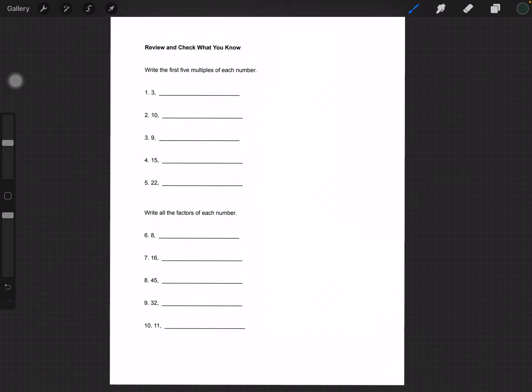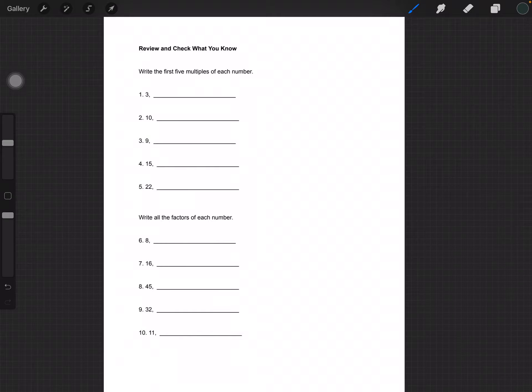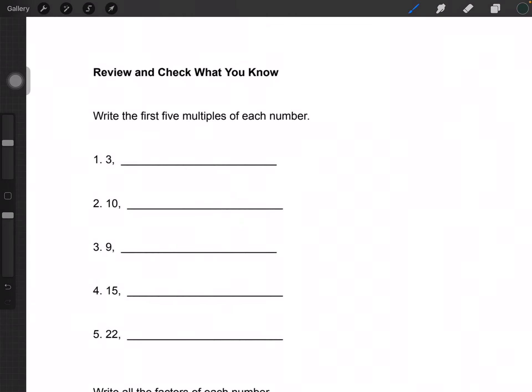The second page is asking us to write the first 5 multiples of each number. The first multiple of 3 we know is 3, second multiple is 6, third multiple is 9, and so on. If you need help, just write it on the side like this. 3 times 5 is 15.